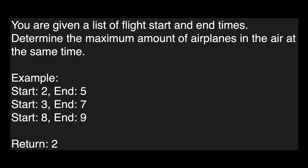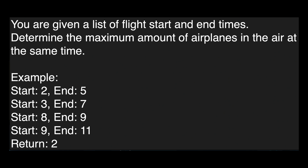Now that we have the prompt, we want to ask clarifying questions. A lot of times these problems will be vague because they want you to actually ask questions before you try to solve it. One thing to ask is: is a plane in the air at its start or end time? For example, if we add a fourth plane that starts at time 9 and ends at time 11, does this overlap with the plane before it? Since the previous plane has an end time of 9 and this one has a start time of 9, are they considered in the air at the same time? The answer is no — once a plane ends it's no longer in the air. However, at a start time of 9 that plane is considered to be in the air.